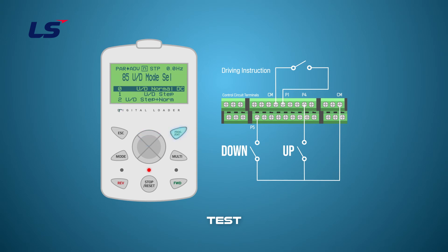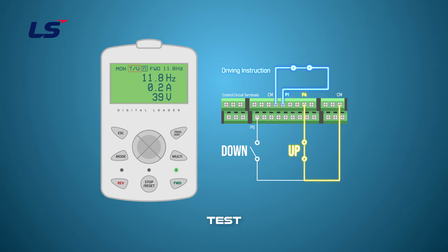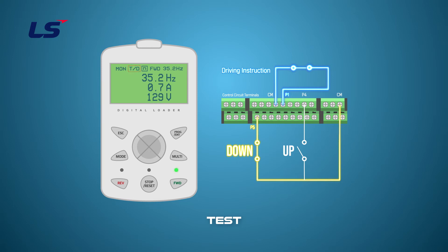Then, the frequency command source display at the top of the monitor mode changes to S. In this state, when the multifunction input programmed as Up is on, S changes to U and the frequency increases while it is on. When the multifunction input programmed as Down is on, S changes to D, and the frequency decreases while it is on.